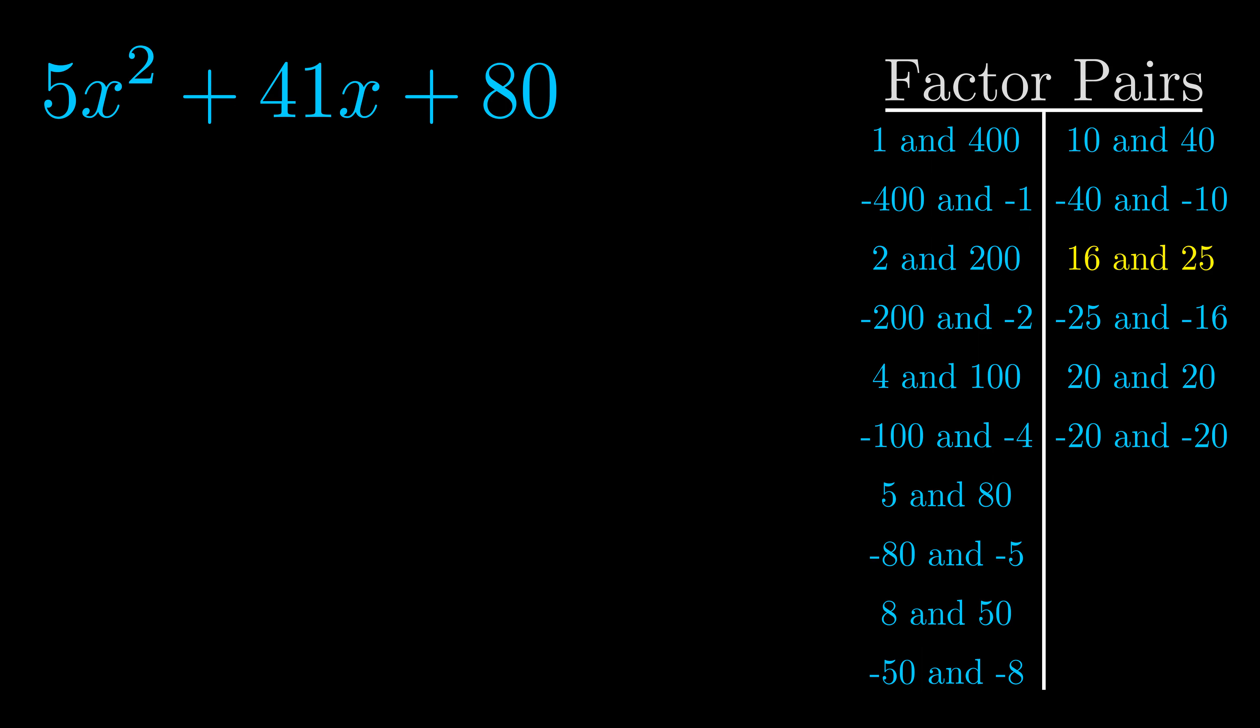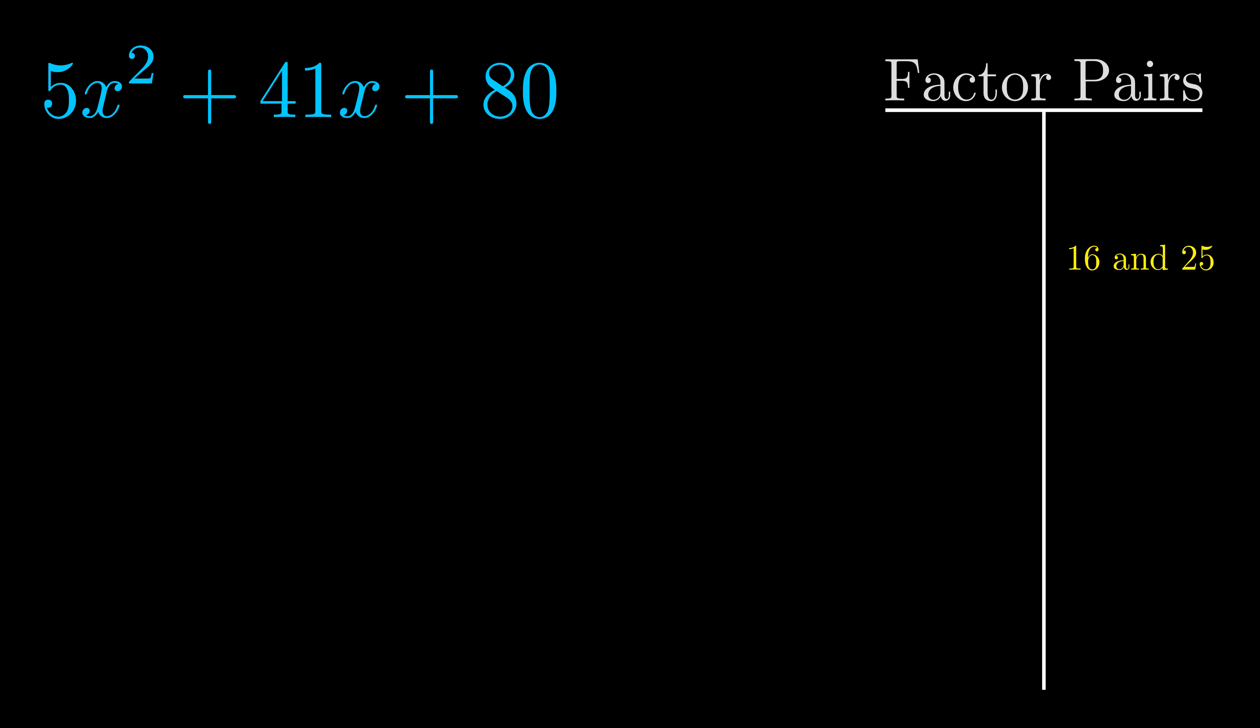And really this is the only factor pair that we need. Now once we have this factor pair what we want to do is we want to use it to split up the b value.